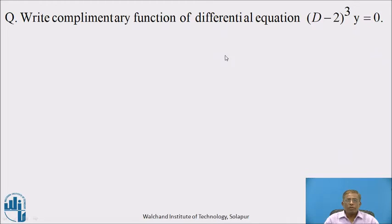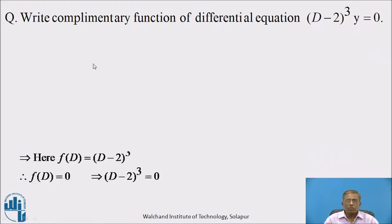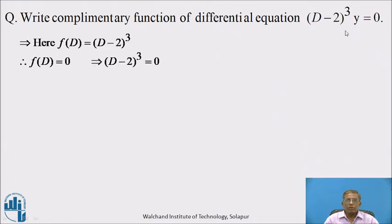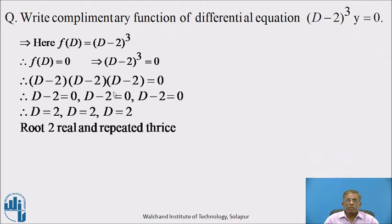Come back. I hope you have written the answer to this question. Let us see the solution. This is a differential equation of the type f(D)·y = 0. Here f(D) = (D − 2)³. To get the auxiliary equation, equate f(D) = 0. Therefore (D − 2)³ = 0, which gives D − 2 = 0 three times. From this, D = 2, D = 2, D = 2. Here root 2 is real and repeated 3 times.